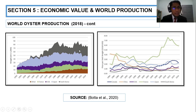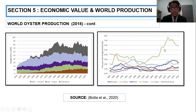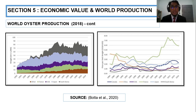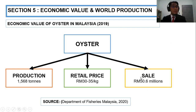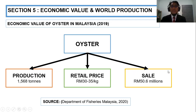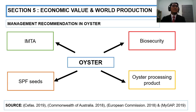Besides China, South Korea is the second largest producer, and Japan is the third. For the US and France and others — France has the highest price per unit weight; in 2012 they had nearly 8 USD per kilogram. In Malaysia, according to the Department of Fisheries 2020, oyster production is about 1,568 metric tons, with a retail price of about 30 to 35 ringgit per kilogram, and total sales recorded in 2019 were about 50.6 million ringgit Malaysia.